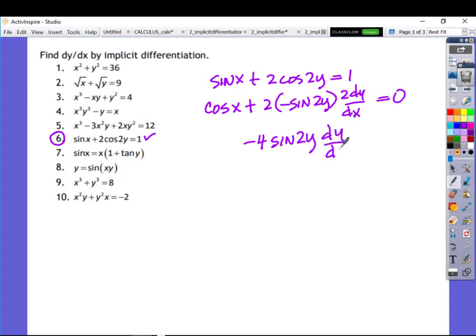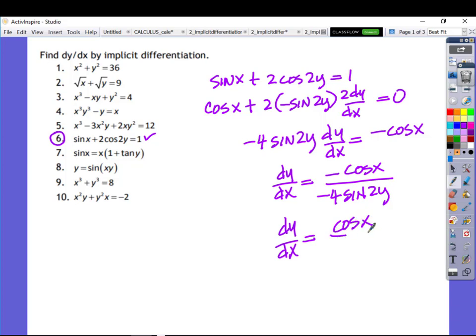is equal to negative cosine of x, all over this negative 4 sine of 2y. And the negatives are a little clunky together, so I think I'll just get rid of those two for a final answer of dy dx is equal to cosine x over 4 sine of 2y.